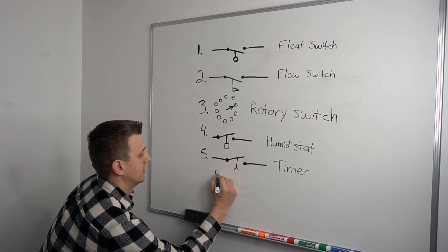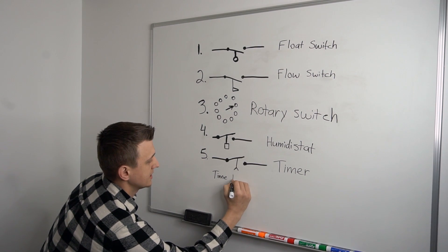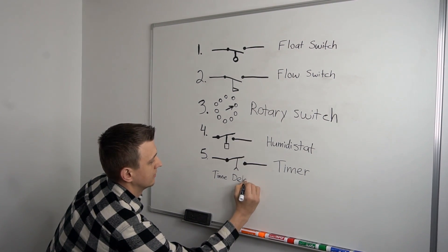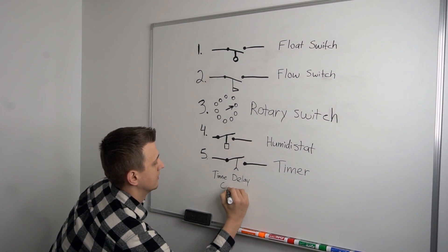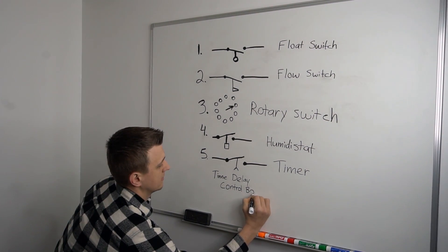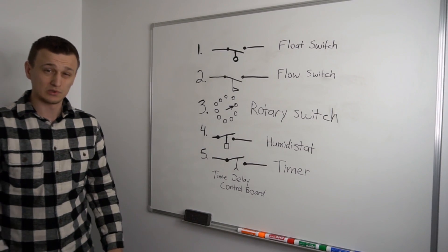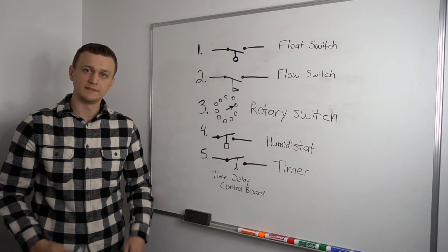So if you ever see a little symbol like this, that just means it's a timer switch. Almost all the time, a switch like that will be found in a time delay control board. So if you see this thing on a wiring diagram, most likely that means there's going to be a time delay control board in there.